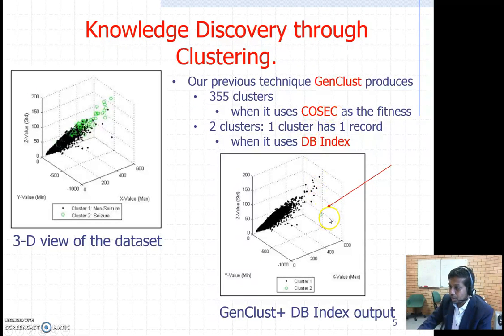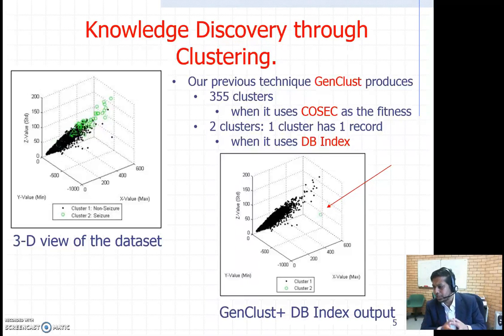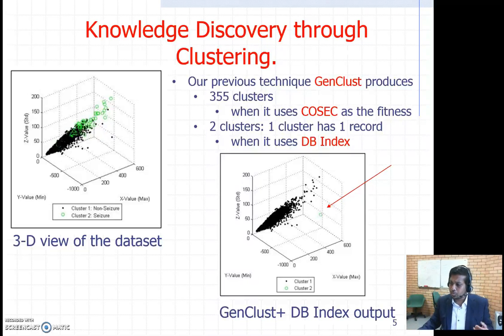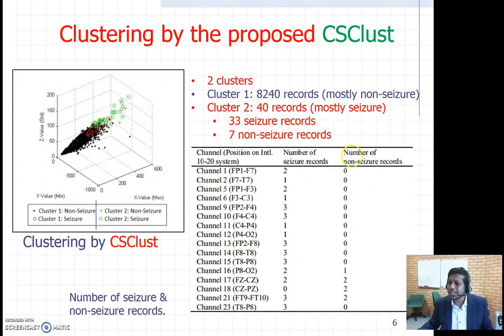It's not just GenClust that we compared — we also used other existing techniques like GAGR. Unfortunately, due to the fitness functions they use, they also find similar poor clustering solutions — one cluster having only one or two records. In terms of knowledge discovery, those results are not very useful, but CS-Clust finds 40 records in a cluster, giving a better clustering result.